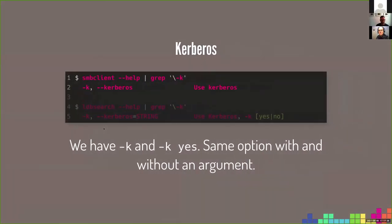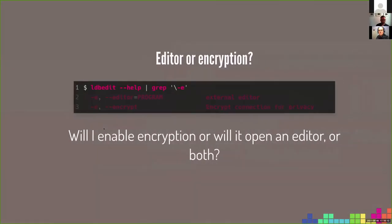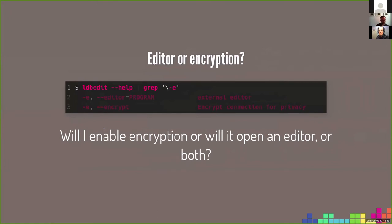One of the most used options is probably the one for turning on Kerberos. For example, smbclient uses -k without an argument, while ldbsearch uses -k with an argument of yes or no. So you need to remember which tool needs an argument and which does not. Also, if you look at what -e does in ldbedit, that option appears twice — you don't know whether it will enable encryption or open an editor, or both.